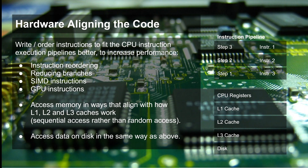The third principle is to align your code with how the underlying hardware works. This includes techniques such as instruction reordering, reducing branches, using SIMD instructions, and using GPU instructions. Additionally, you need to learn how to access memory in ways that align with how the L1, L2, and L3 caches work in your computer, and access data on disk similarly. As a rule of thumb, that means preferring sequential access to bytes in memory and on disk rather than random access.